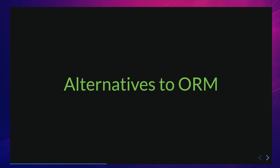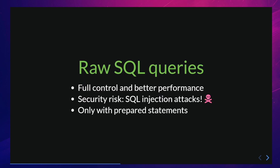So the question is, what could be used instead of an ORM? The first thing that comes to mind for most developers is the use of raw SQL. This approach allows developers to have full control over the SQL code being executed and can provide better performance in certain situations. However, it also poses a potential security risk in the form of an SQL injection attack. SQL injection is a type of attack where an attacker is able to insert malicious SQL code into a query, often through user input. If a developer is not careful when constructing and executing raw SQL queries, it can leave the application vulnerable to this type of attack. When considering raw SQL queries, it's important to keep in mind the potential security risks and take appropriate measures to prevent SQL injection attacks. This can include using prepared statements, parameterized queries, and input validation.